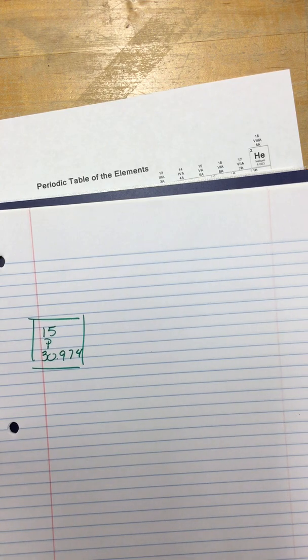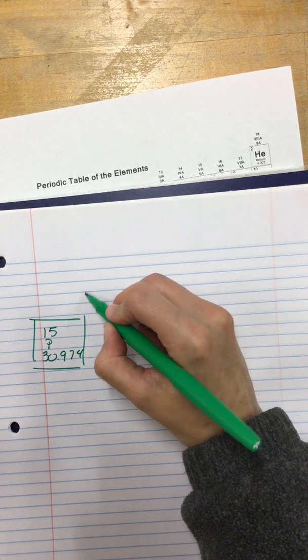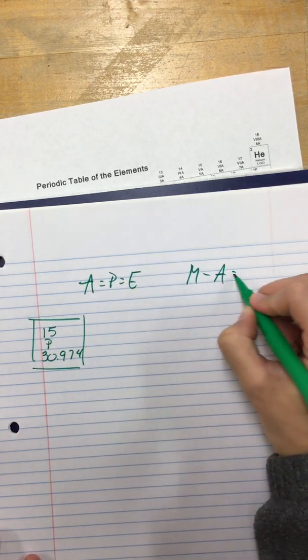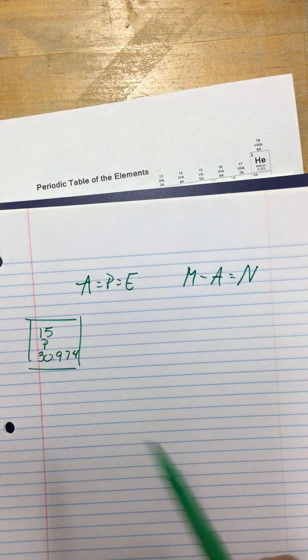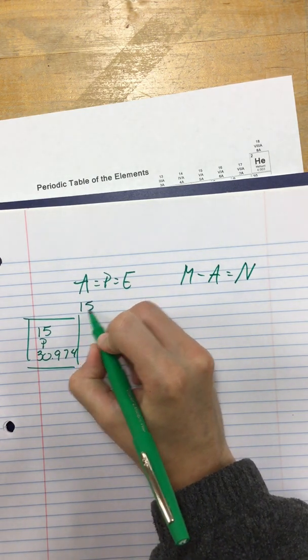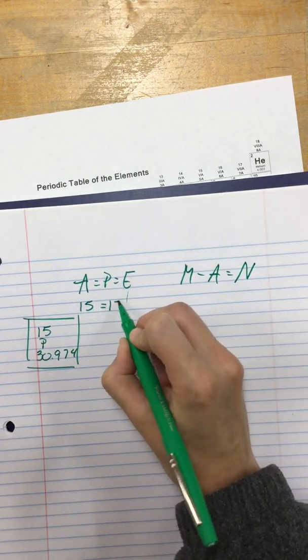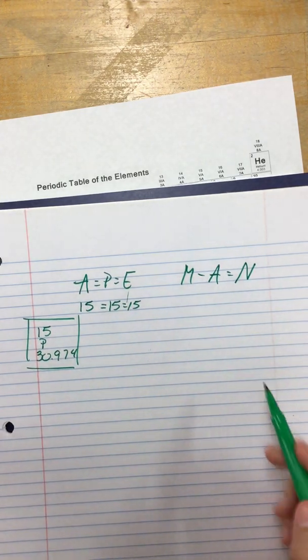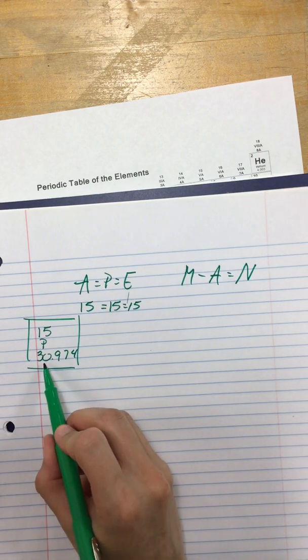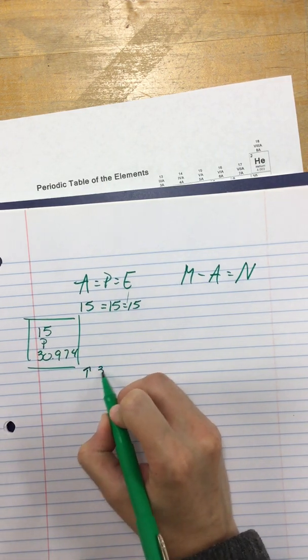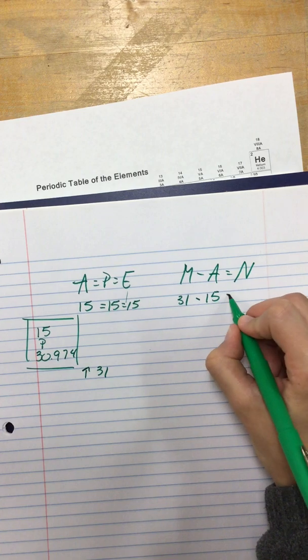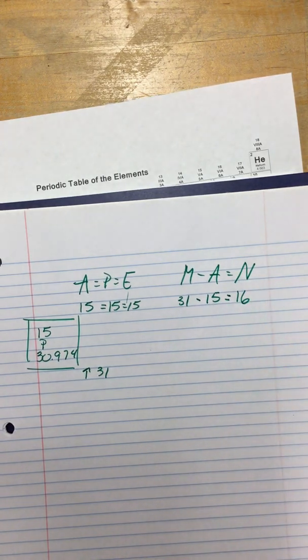Now, I get to start, as always, with my equations. So, I have A equals P equals E. Man, M minus A equals N. Now, I can fill in my numbers. The atomic number comes first. The first number is 15. Meaning, my protons and my electrons are all going to be 15. Now, I can move over to this side. Atomic mass is the bottom number. 30.97 rounds up to 31. 31 minus A is 15. That leaves us with 16 neutrons.